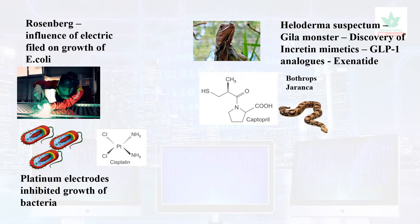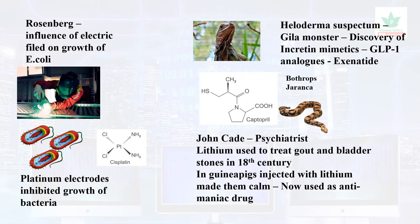A patient bitten by a viper snake led to the discovery of the antihypertensive drug captopril. John Cade, a psychiatrist, was instrumental in the discovery of lithium. Lithium was previously used to treat gout and bladder stones. In guinea pigs injected with urine from patients on lithium, the animals were found to be calm, and lithium is now used as an anti-manic drug.